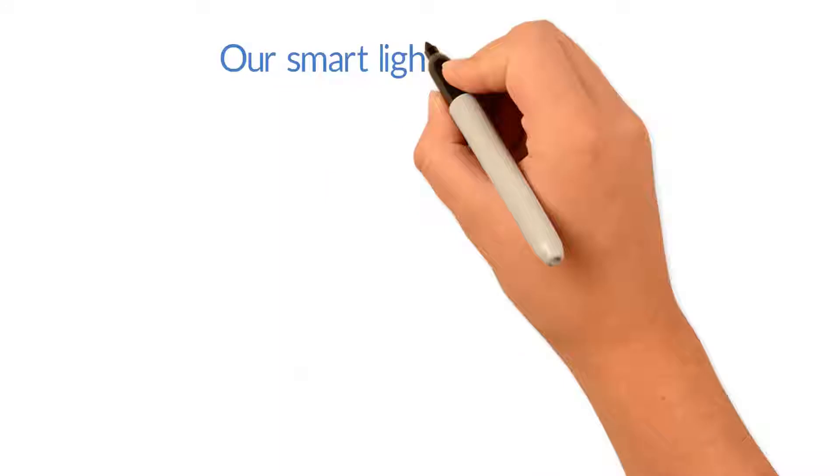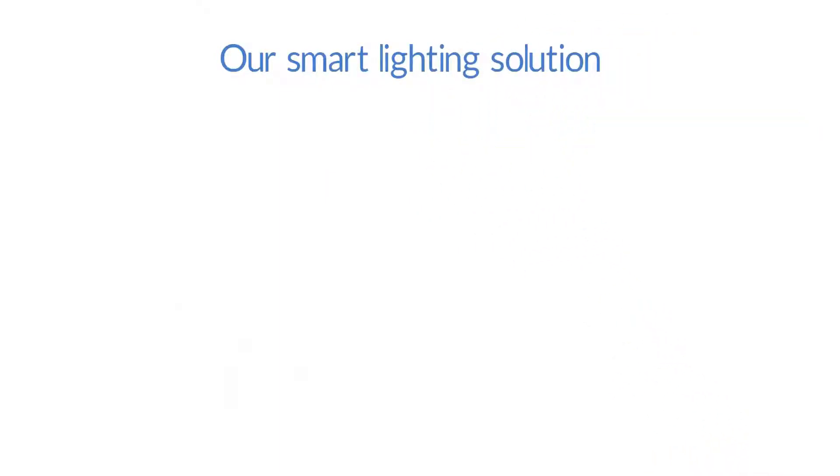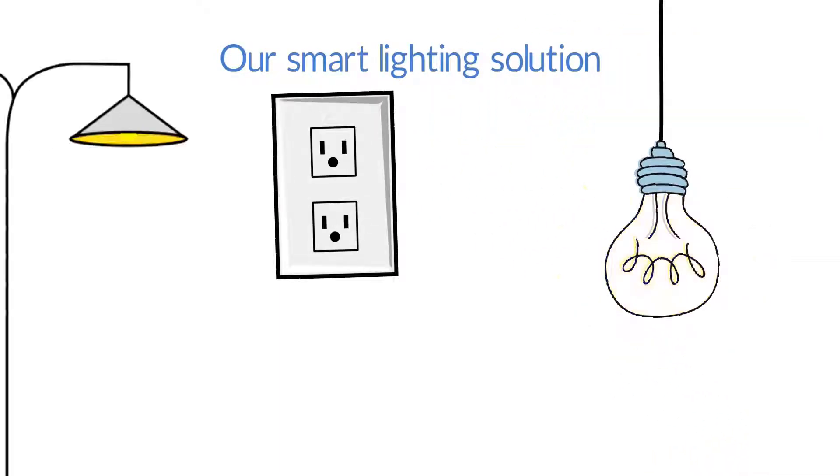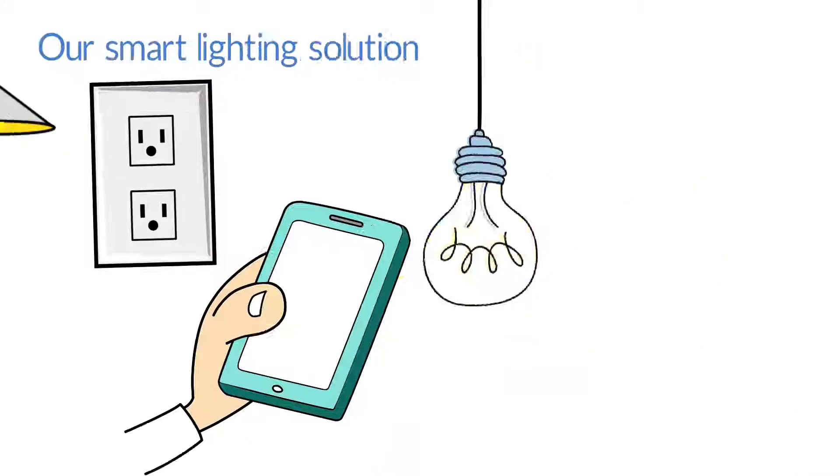Our smart lighting solution allows you to wirelessly control the lights, dimmers, and outlets throughout your home through your cell phone.